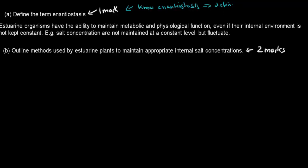So for this one, what I wrote is estuarine organisms have the ability to maintain metabolic and physiological function, even if their internal environment is not kept constant. For example, salt concentrations are not maintained at a constant level but fluctuate.